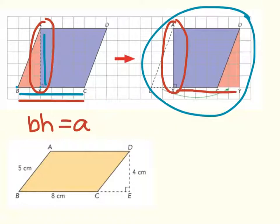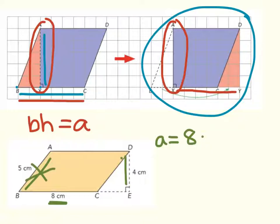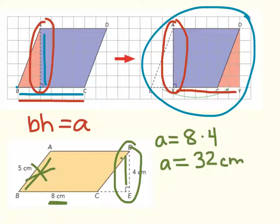Now that we know the formula, let's solve. Let's take a look at parallelogram ABCD. The base would be line BC, which is 8 centimeters long, so area equals 8 for our base. Now let's find our height. It cannot be line AB because it is not perpendicular to our base. Therefore our height must be line DE, which is 4 centimeters long. So the area of our parallelogram is equal to 8 times 4, or 32 centimeters squared.